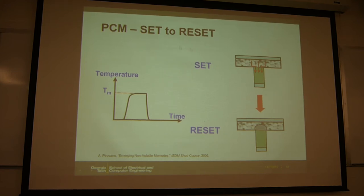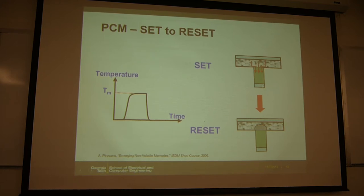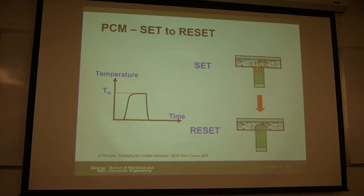Let's go through the reset process. Initially the device is in the crystalline state — lower resistance. You apply a large current, and due to Joule heating you increase the temperature above the melting temperature. Then after a short period you remove the current pulse, the temperature goes down, you quench the device, and this part becomes amorphous.